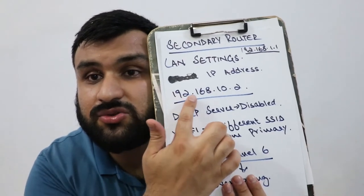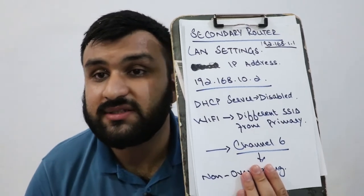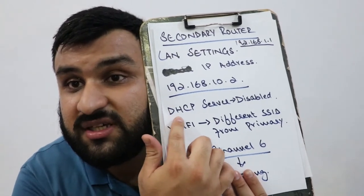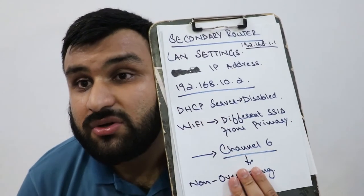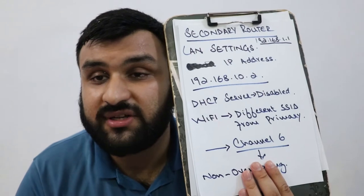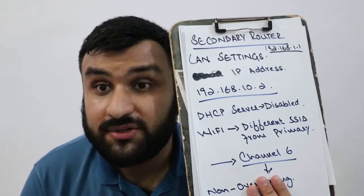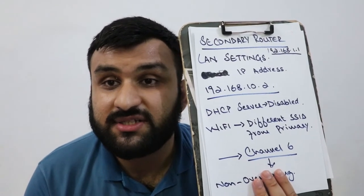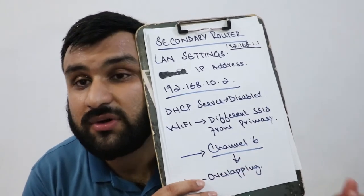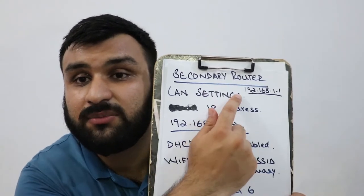If you want to use more than two routers, the same procedure applies — just use 192.168.10.3, .4, .5, etc. On the secondary router, keep the DHCP server disabled, so that only the primary router provides IP addresses for all devices. If you enable DHCP on both routers, the network gets congested because IP addresses can overlap.